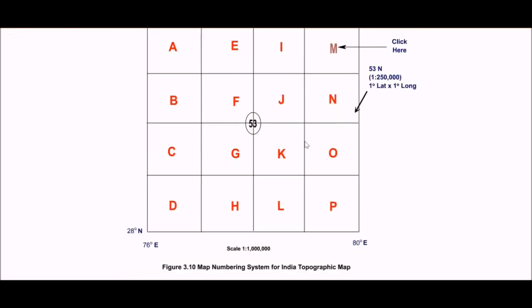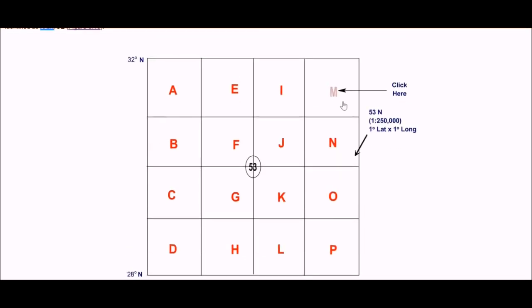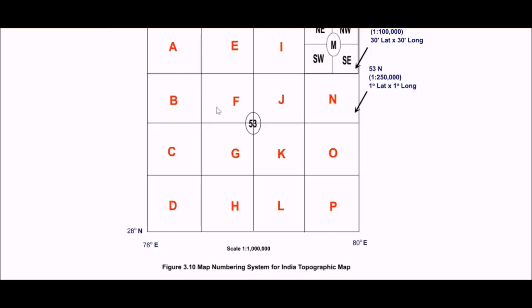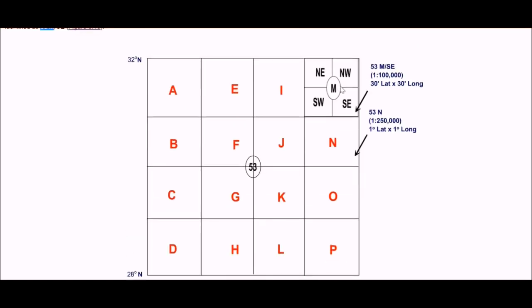Let us see this figure, this shows exactly, let me click this M for you. These are the 4 partitions, northwest, northeast, southwest and southeast. This is 53, now we have come to M, so 53M and if this is the position then 53M SE, this is 1 is to 100,000.